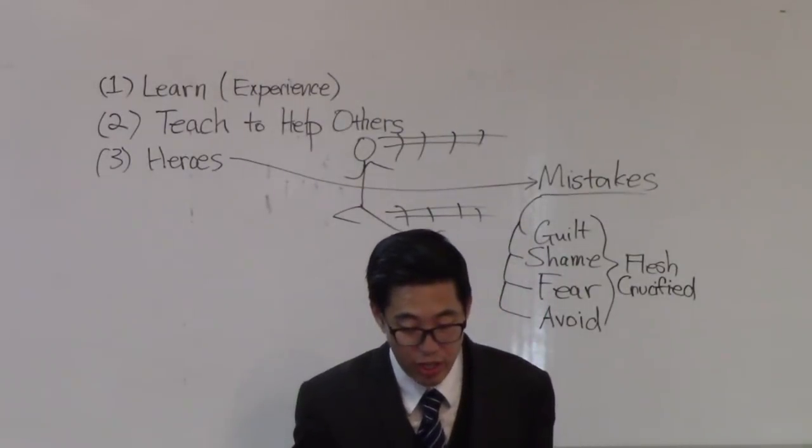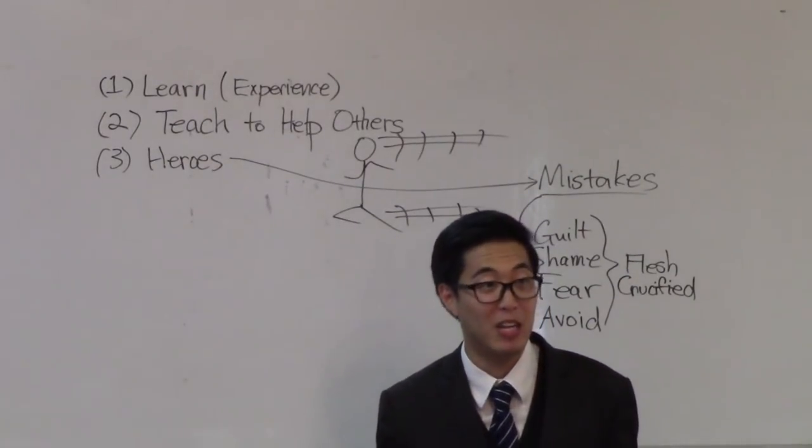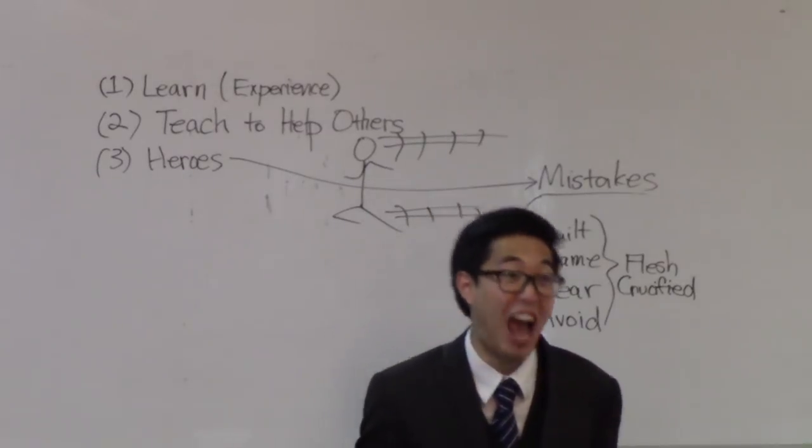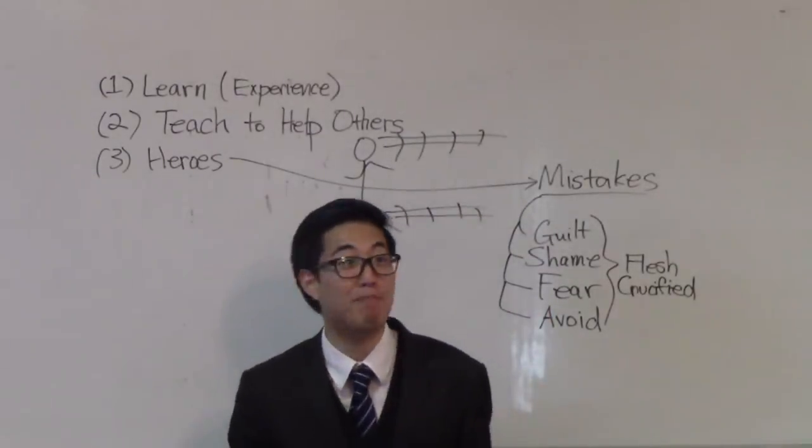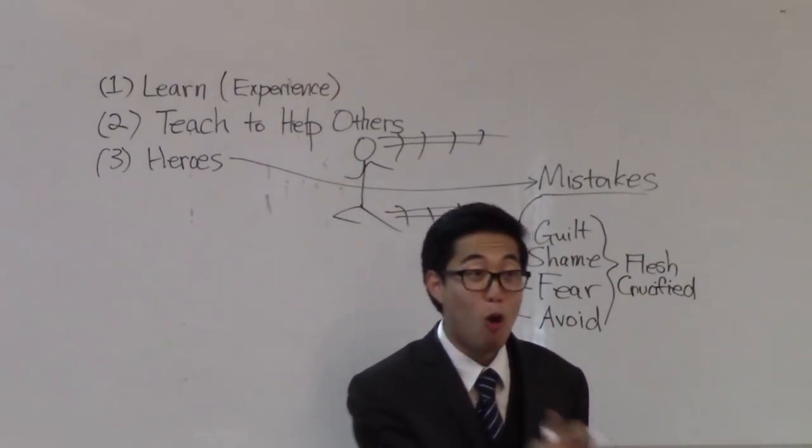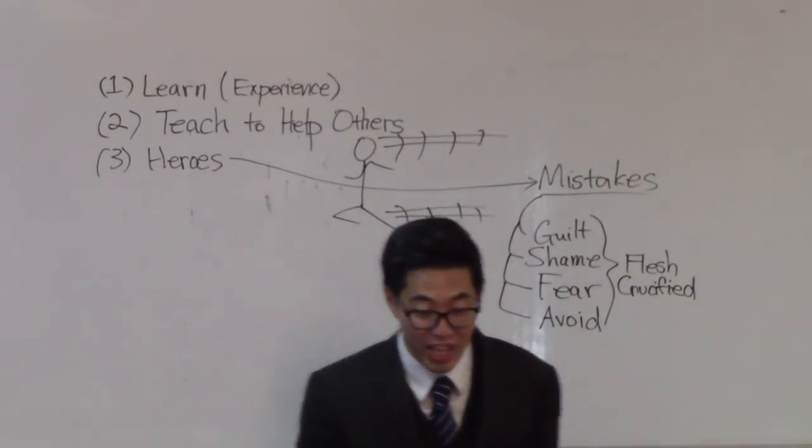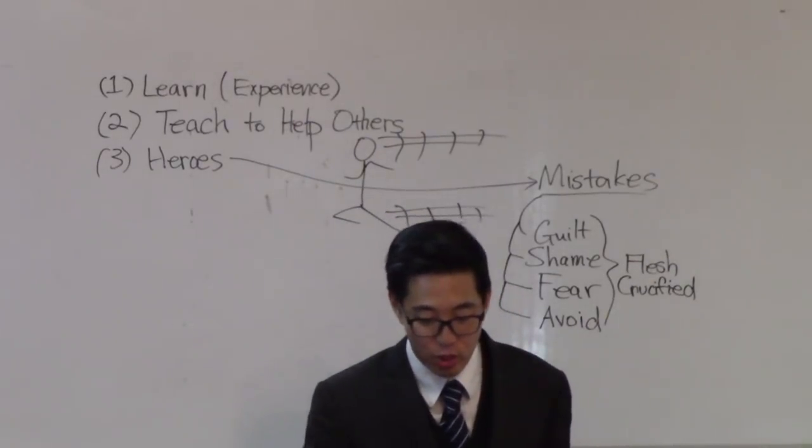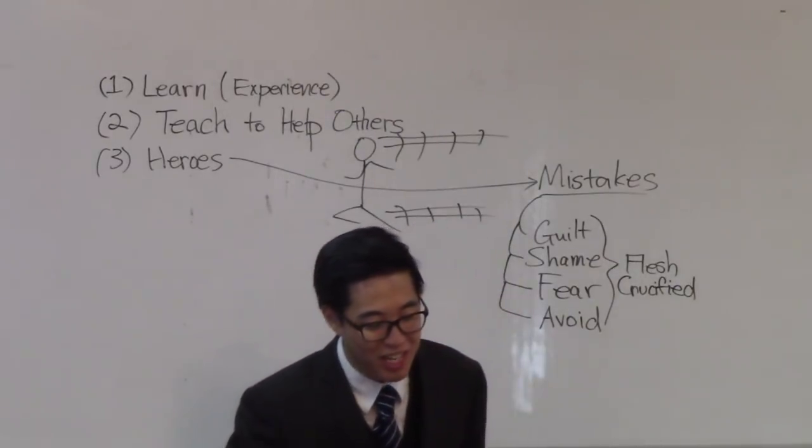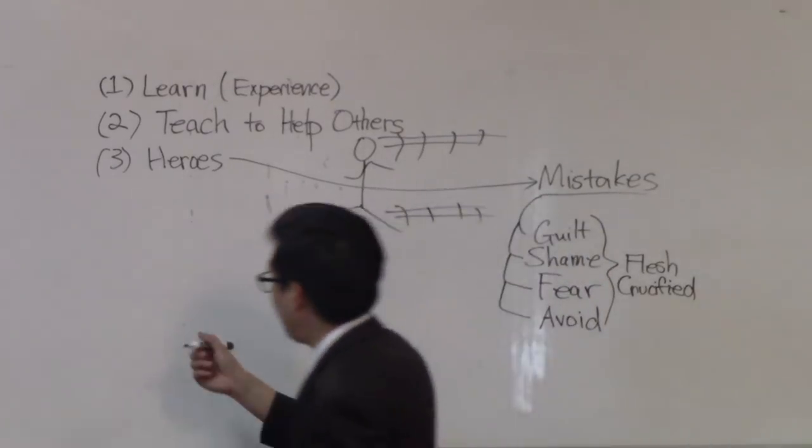Look at verse 32. Gideon. Really? He built an ephod. Verse 32. Barak. Really? He's a coward. A woman had more guts than Barak, if you read your Bible. Verse 32. Samson. No way. He slept with prostitutes. He's a hero of faith. Verse 32. Jephthah. He made a foolish oath. Verse 32. David. He committed adultery. Verse 32. Samuel. He was fearful of Saul. And these were all heroes of faith.